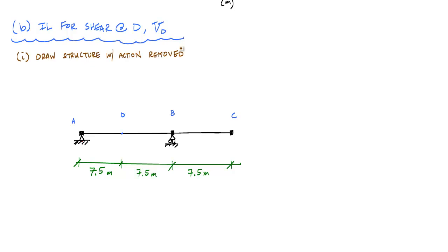In this case, it means allowing point D to go up and down but not allowing rotation because we still have to be able to transfer moments across the section as well as axial forces. So that means we're going to throw in some rollers here and then add blocks to represent the moment transfer. And now point D can go up and down. It can transfer axial forces and moments, but it cannot transfer shear. And now we want to introduce the unit displacement associated with the shear force.